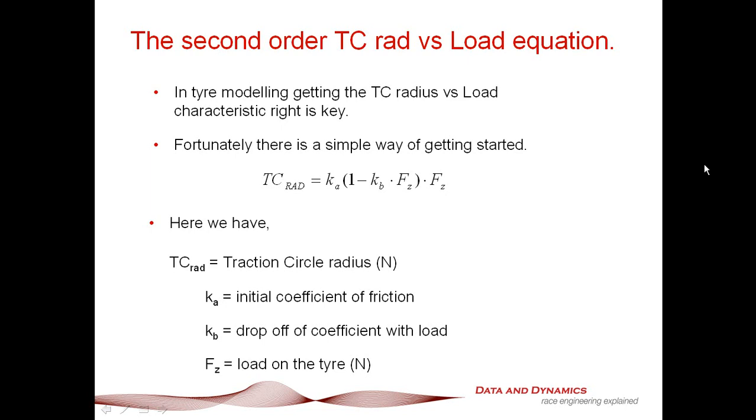Okay, the Ka is the initial coefficient of friction. Kb is how that initial coefficient of friction drops off linearly with load. So, as you can see, this is a pretty simple but benign equation, but you can do some really clever stuff with this that is very, very powerful. And if anything, what you're seeing here is pretty much the base building block of any tire model.